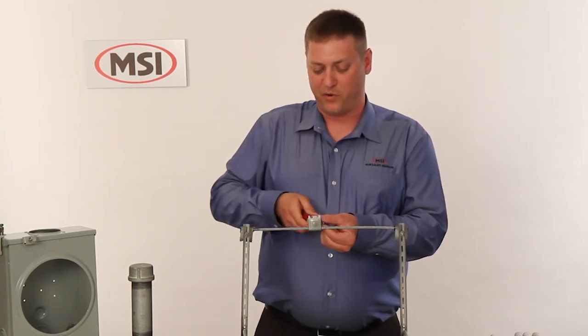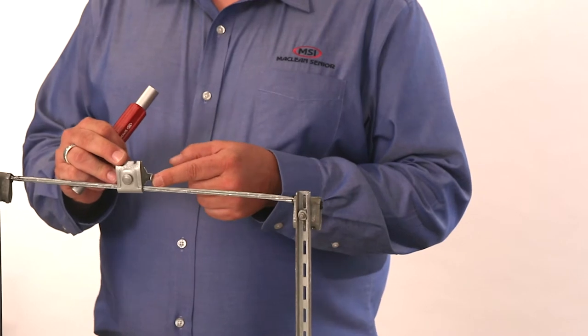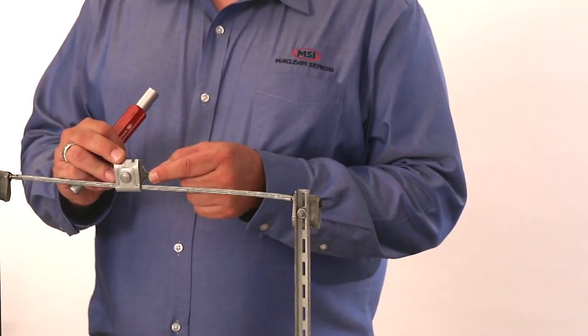As I mentioned before, this little tab on the side is used to separate the messenger during the mid-span.